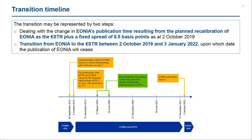What you can see on the graph, and this is important to note, is already a recommendation for the so-called discounting switch date — basically the date on which we recommend changing the use of EONIA as the discounting measure for the valuation of derivatives contracts. We recommend using the time frame of the second quarter of 2020 to make that change, and I will explain in a few seconds why we believe that recommendation is important to recognize.